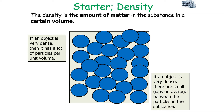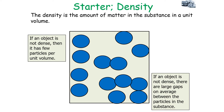If an object is very dense, it must have lots of particles per unit volume, meaning there are small gaps on average between the particles in a substance. If an object is not very dense, then it has few particles per unit volume, meaning there are large gaps on average between the particles in the substance.